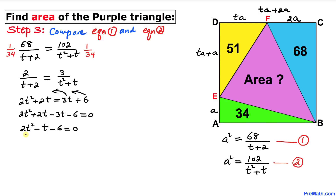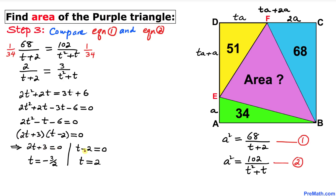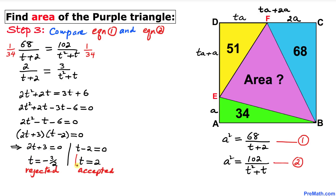Bringing everything to the left-hand side and simplifying, we get 2t² minus t minus 6 equals 0. This is a quadratic equation we solve by factoring: (2t + 3)(t − 2) equals 0. This gives t equals negative 3 over 2 or t equals 2. Since t cannot be negative, we reject the first value and accept t equals 2.